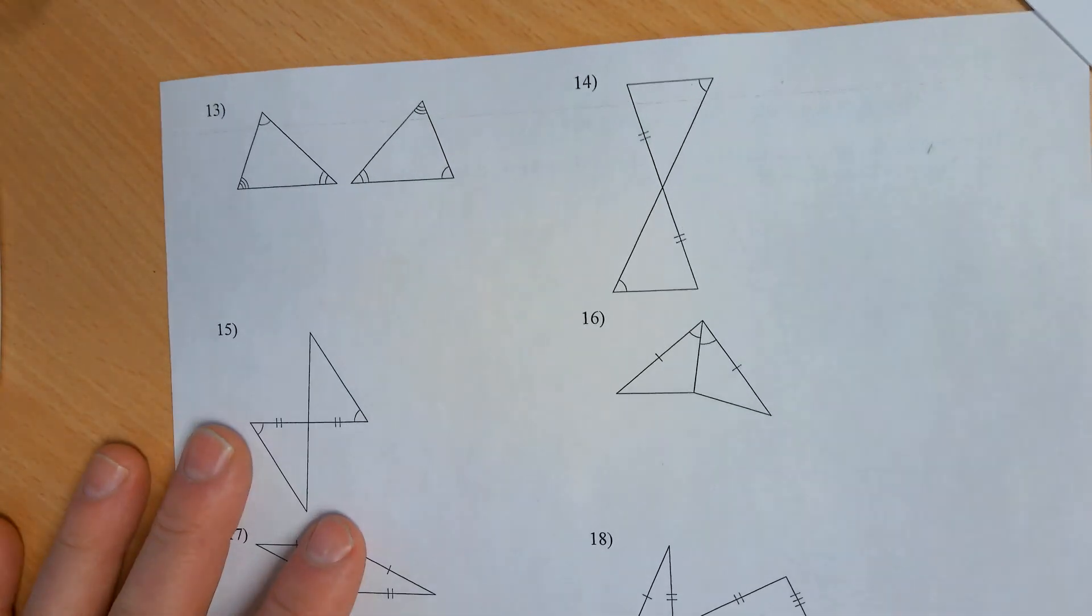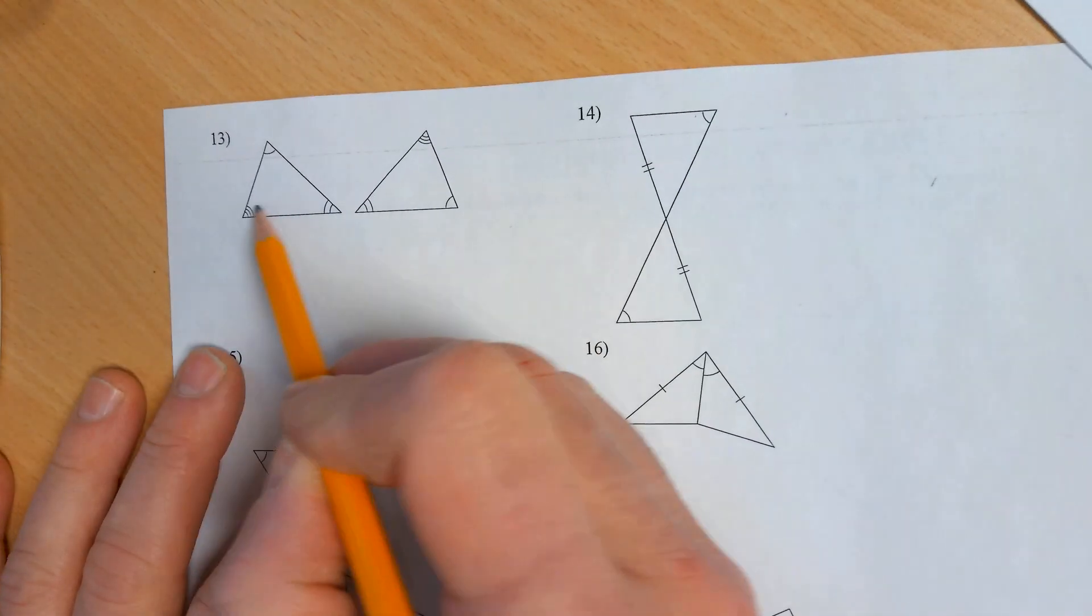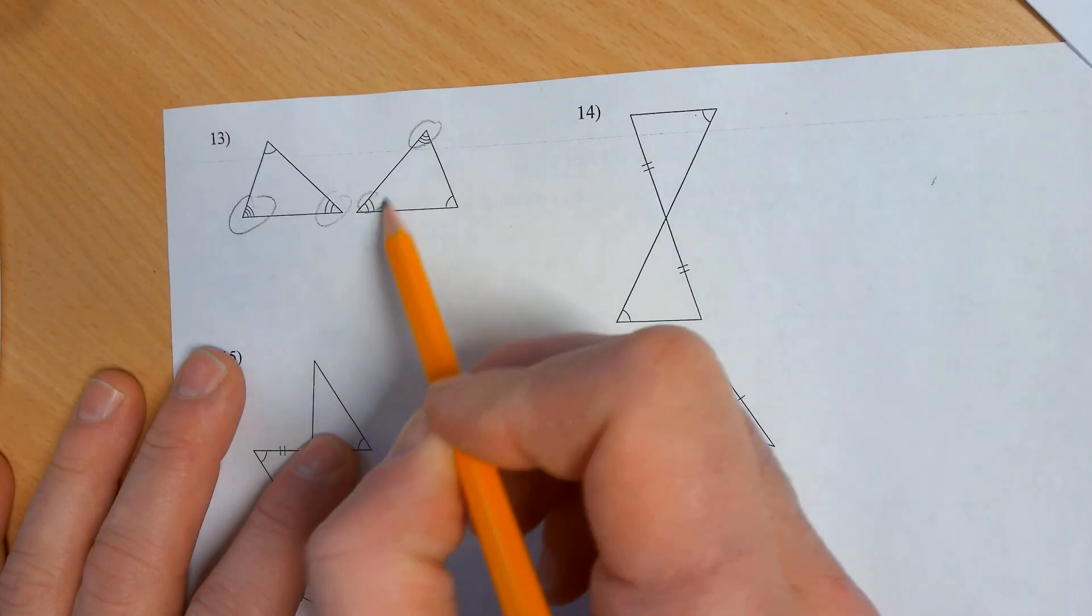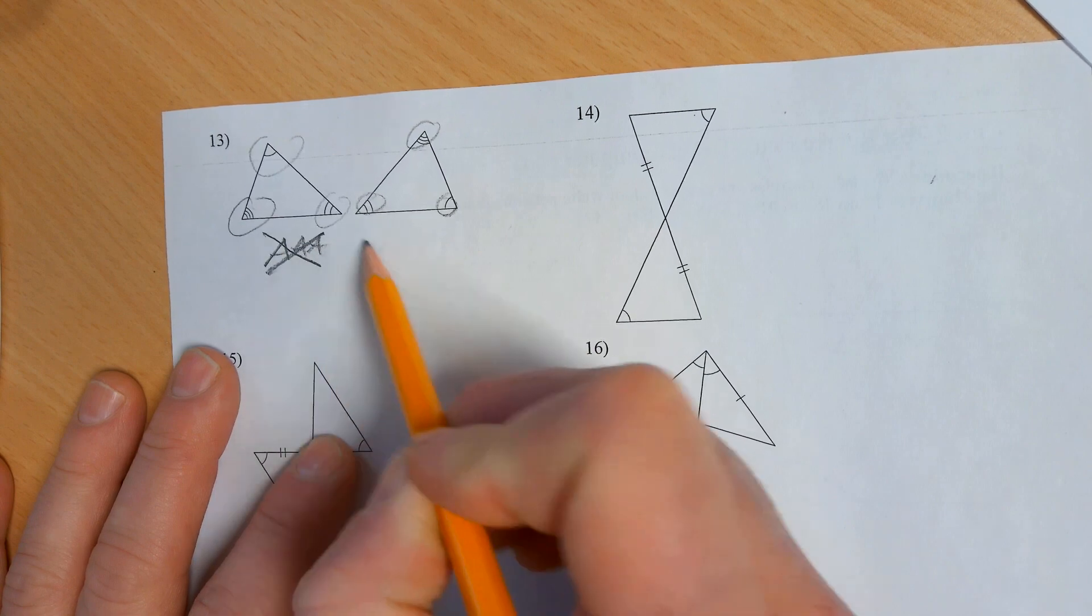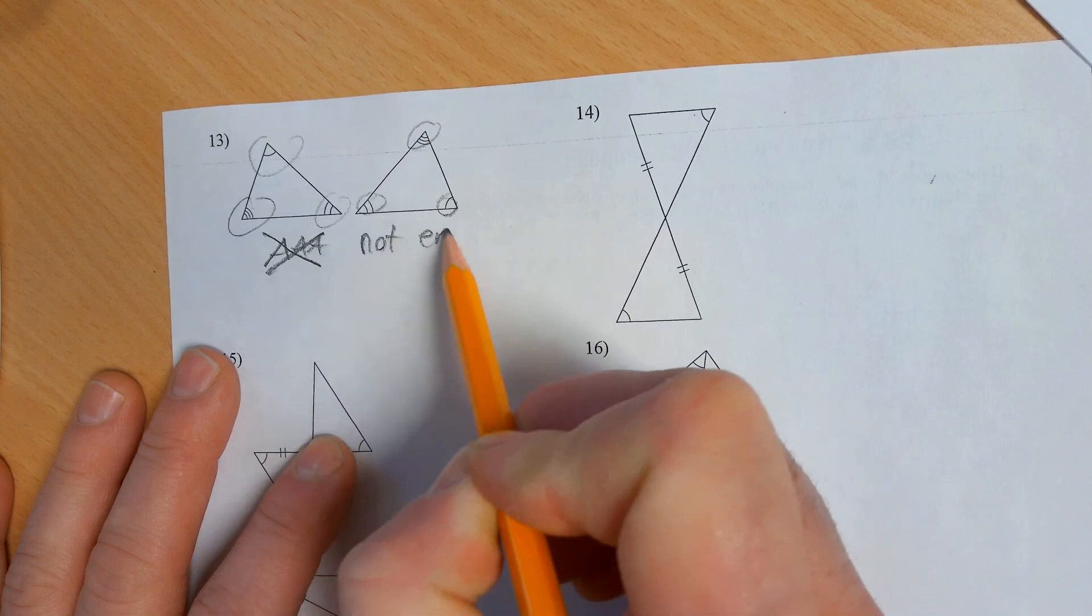The front side is for you to do. The back side is all the examples I'm going to do. So angle, angle, angle. Doesn't work. Not enough information.